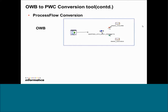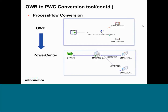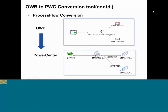Here is an example of process flow conversion. The OWP process flow has got a mapping, access email, email, and failure email. Equally, the PowerCenter workflow can be seen here, which has got a session in place of the mapping and email tasks as above. Even the link conditions have been imported from OWP to PowerCenter — if the mapping succeeds, a success email gets triggered; if the mapping fails, a failure email gets triggered.